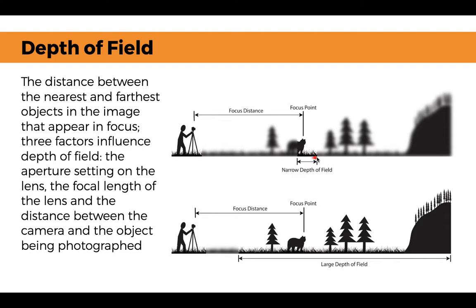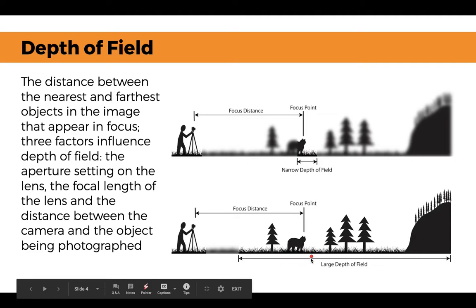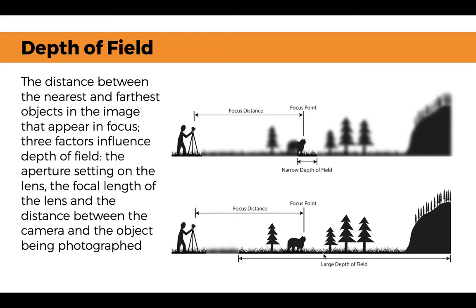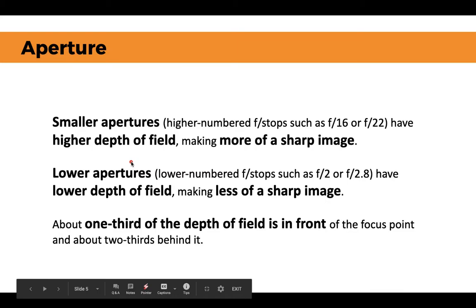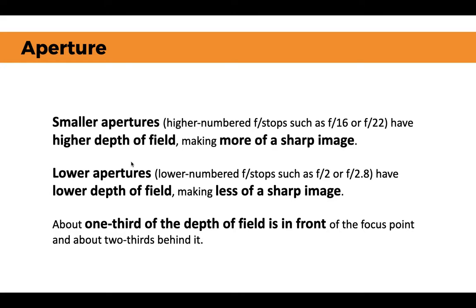If our focal point is this lone wolf, we can see we have a very narrow depth of field — everything behind this wolf, like the trees and the mountain, will be very blurry. When you have a large depth of field, your focal point is still the wolf, but you'll also see details in the trees and mountain behind it. Smaller apertures, which are higher numbered f-stops like f-16 or f-22, tend to have a higher depth of field, creating a sharper image. A lower aperture like f-2 or f-2.8 gives a lower depth of field and a less sharp image.